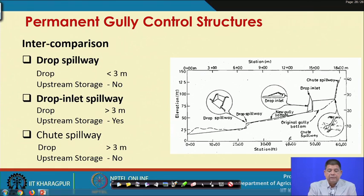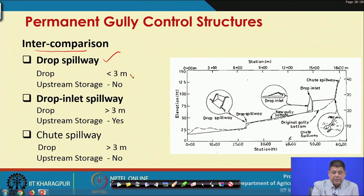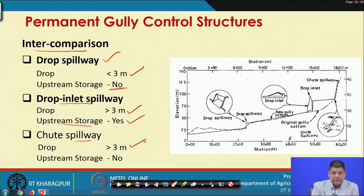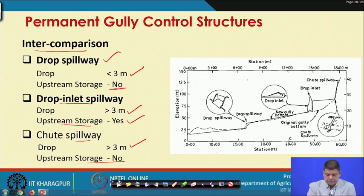To summarize: drop spillway is preferred when drop is less than 3 meters and there is no provision for temporary upstream storage; drop inlet spillway is used when drop is greater than 3 meters with opportunity for upstream storage; and chute spillway is preferred for drops greater than 3 meters with large discharges and no temporary storage. We have seen the 3 types of permanent structures and their characteristics, and will spend significant time in coming weeks on designing each of these structures. Thank you very much.